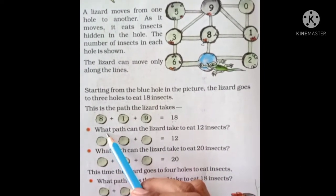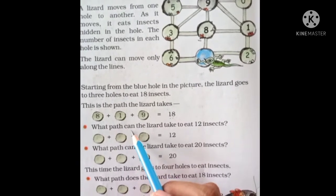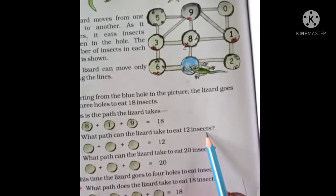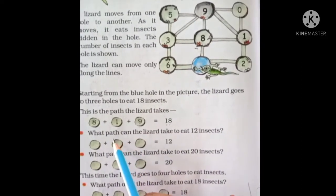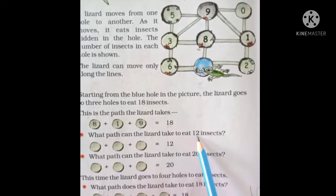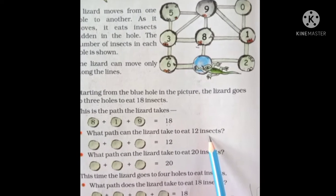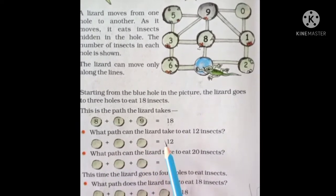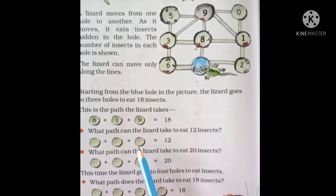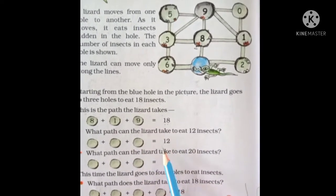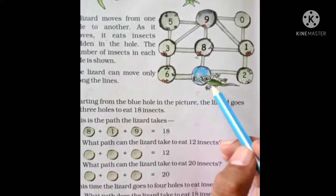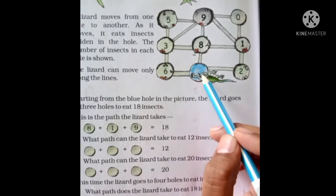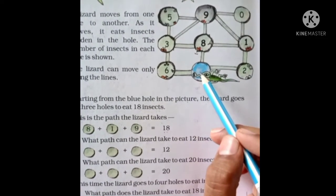Let's see the next question. W-H-A-T, what P-A-T-H, path can the lizard take to eat 12 insects? Yahaan pe lizard aisa kaun sa raasta legi — path yani raasta — jisse wo 12 insects kha sakti hai? Yahaan usko kitne hole mein pass hona hai? 1, 2 and 3. 3 hole mein aisa kaun sa number pe pass hogi jiska total hoga 12? Anyone will say this?